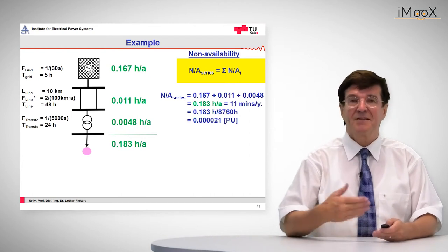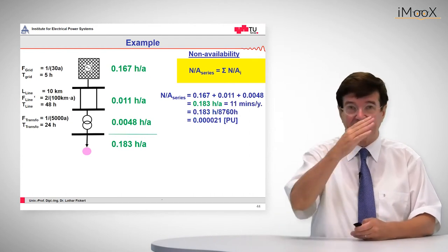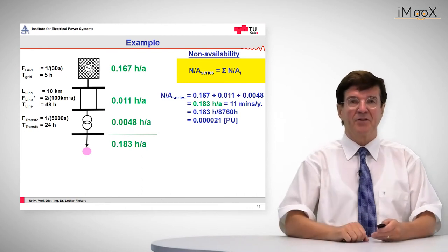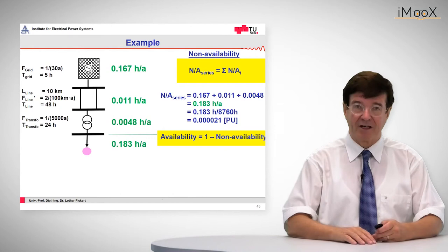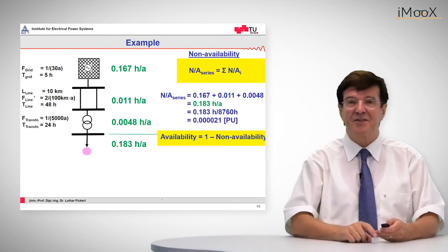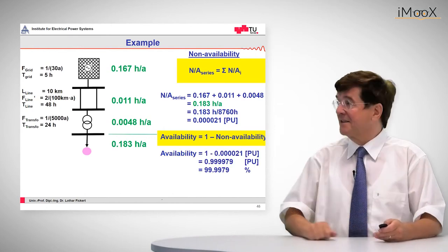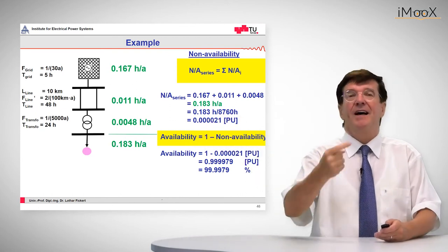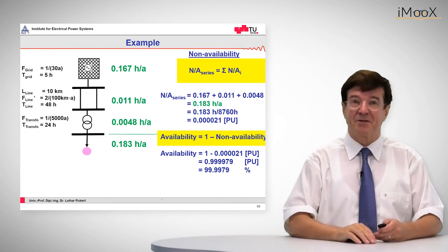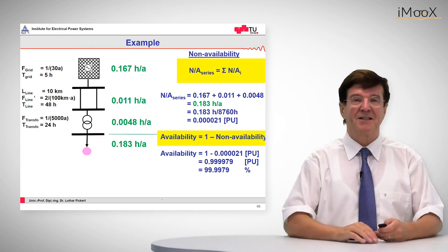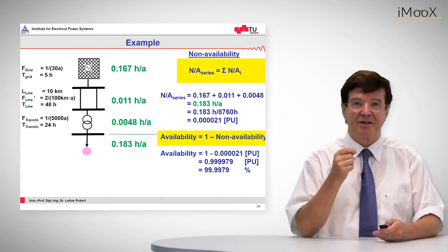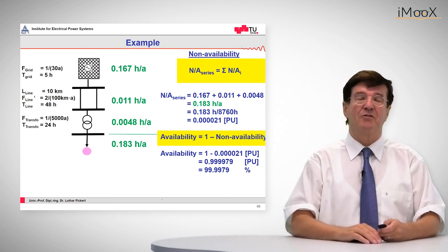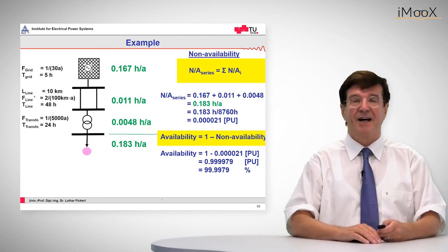In other terms, this is expressed as per unit using 8,760 hours per year. The availability is 1 minus the non-availability, which is 0.99979 per unit. Expressed in percent, the grid is available 99.997% of the observation time of one year. This means it is highly reliable.